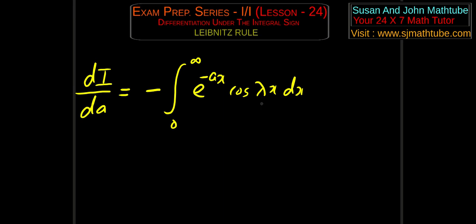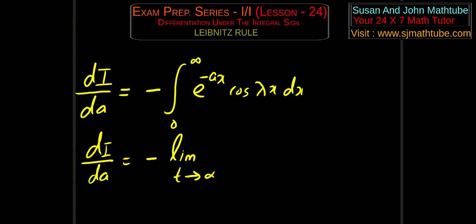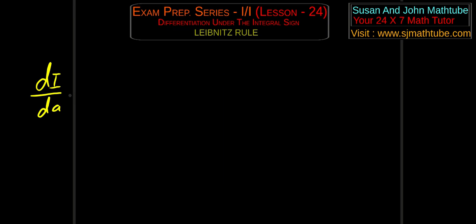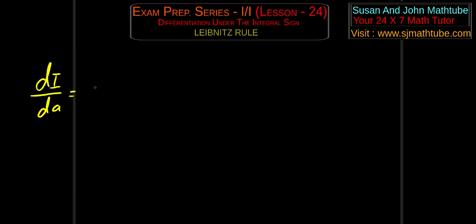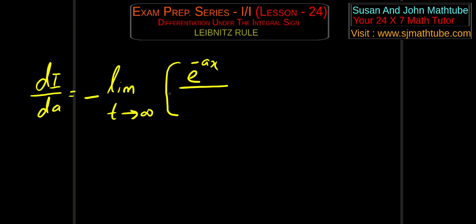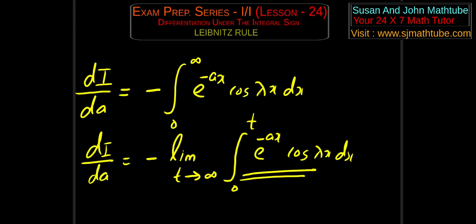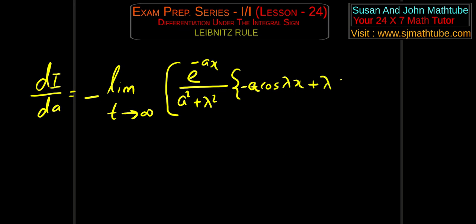In improper integrals, and even in the last video, I gave you the formula how to evaluate this. We have an improper integral, so time to make it proper. I am going to write: limit t tends to infinity, integral from 0 to t, e to the power minus ax cos(λx) dx. And time to integrate. This becomes minus limit t tends to infinity. The integral will be e to the power minus ax divided by the constants a and lambda — so minus a squared plus lambda squared — and minus a cos(λx) plus lambda sin(λx), within the limit x equals 0 to t.